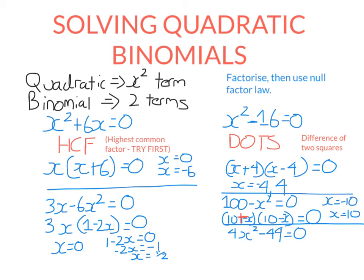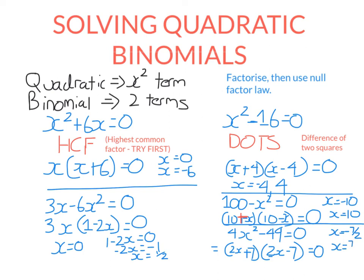Now let's look at 4x squared minus 49 equals zero. You might think it's done differently because there's a 4x squared, but not the case. We can't use highest common factor because there is no common factor between these two terms. We can use difference of two squares because we have a perfect square minus a perfect square. In two brackets, we square root the first — square root of 4x squared is 2x, because 2x times itself gives 4x squared — and square root of 49 is 7. One bracket gets a plus, one gets a minus. If 2x plus 7 equals zero, subtract 7 and divide by 2 to get negative 7 over 2. If 2x minus 7 equals zero, x equals positive 7 over 2.